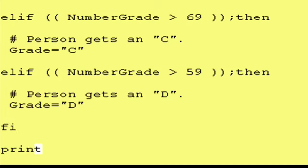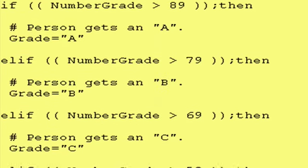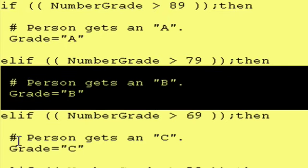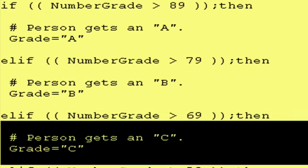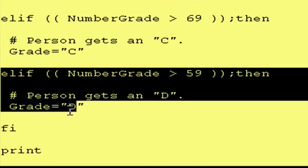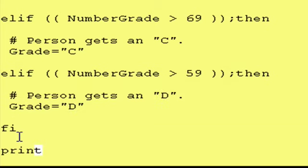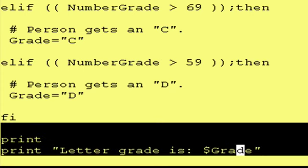Once again, the first true test it encounters, it will execute that block of code and then skip down to the FI and continue execution from then on in. So if the person's grade is a 75, it will not execute this block of code and then it will skip over this last test. It won't even test it and it will go down to the FI and continue execution of the program from there. And all we do is we print out what the letter grade is.